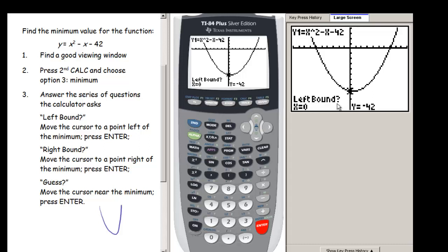So the first thing it asks us is left bound. So what it wants us to do is tell us where approximately our minimum is. So I want to take my spider here and I want to move so that I am definitely to the left of where that minimum is. If I move this way, I know that I'm definitely to the left here. Once I'm to the left, I'm going to press enter.